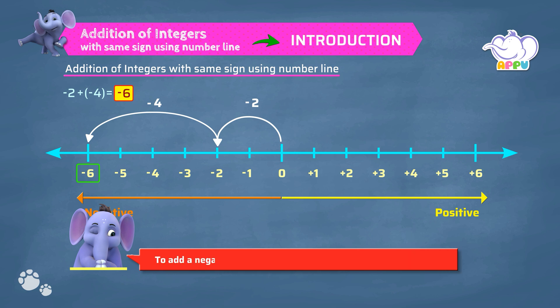To add a negative integer, we move to the left of the number line. This is how we add integers with same sign. Thank you.